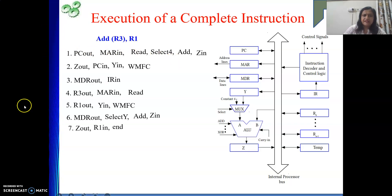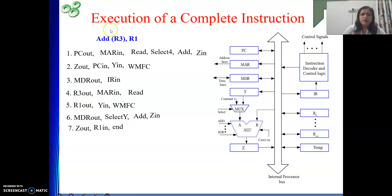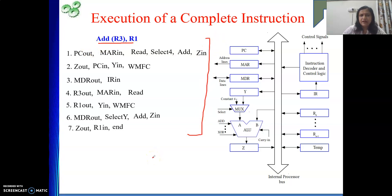For example, signals like PC out, MAR in, R1 out, Y in, MDR out, Select Y, R1 in, Z out — these are the control signals. Our aim is to generate these signals whenever a particular instruction is executed. When this instruction is executed, we need to generate all of these control signals.